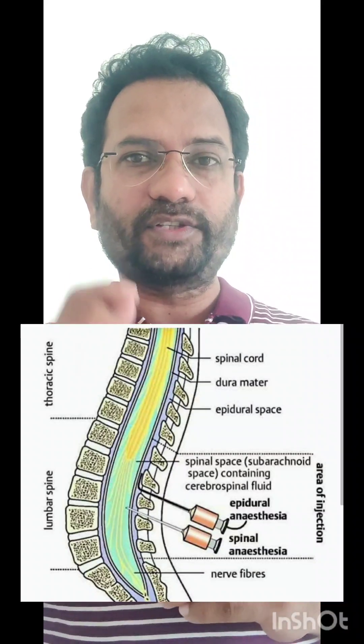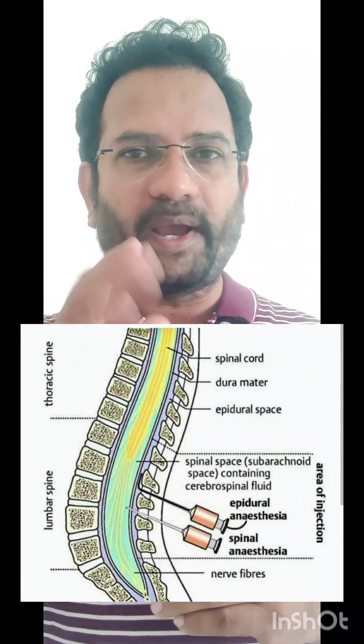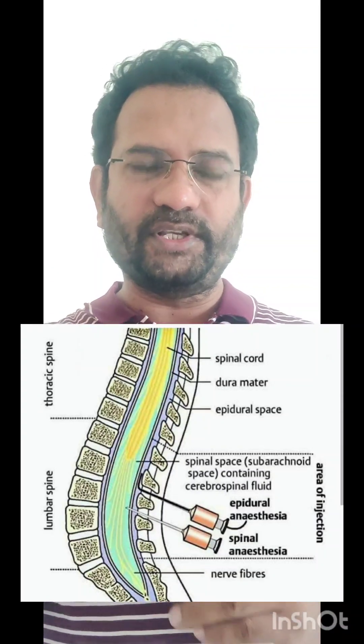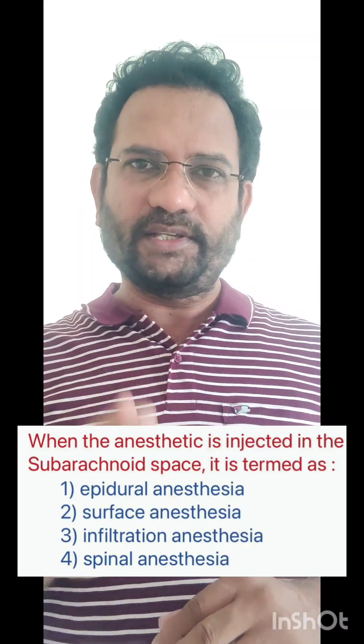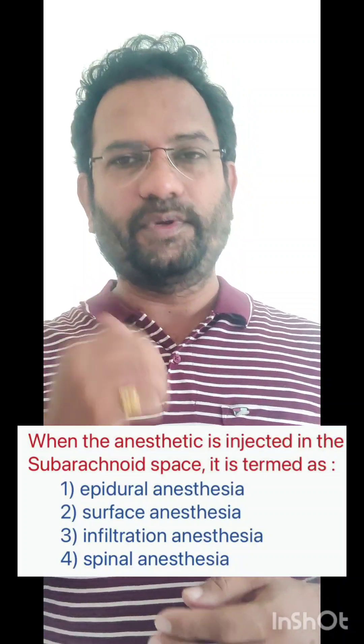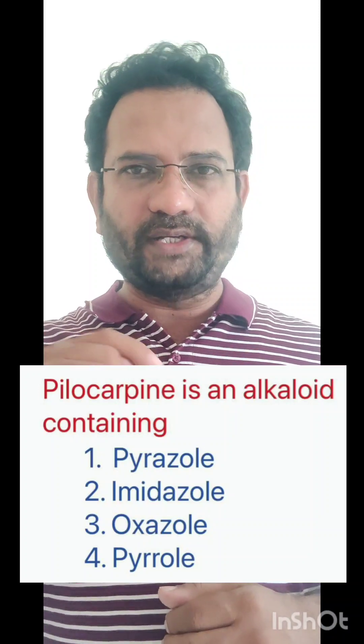Spinal anesthesia is given at the subarachnoid space, so when an injection is given into subarachnoid space it is called spinal anesthesia. The correct answer is option four. The remaining options: surface anesthesia is topical anesthesia, and infiltration anesthesia is a local anesthesia given through injection. Now let us move on to the next question: pilocarpine is an alkaloid containing — options given are pyrazole, imidazole, oxazole, and pyrrole.